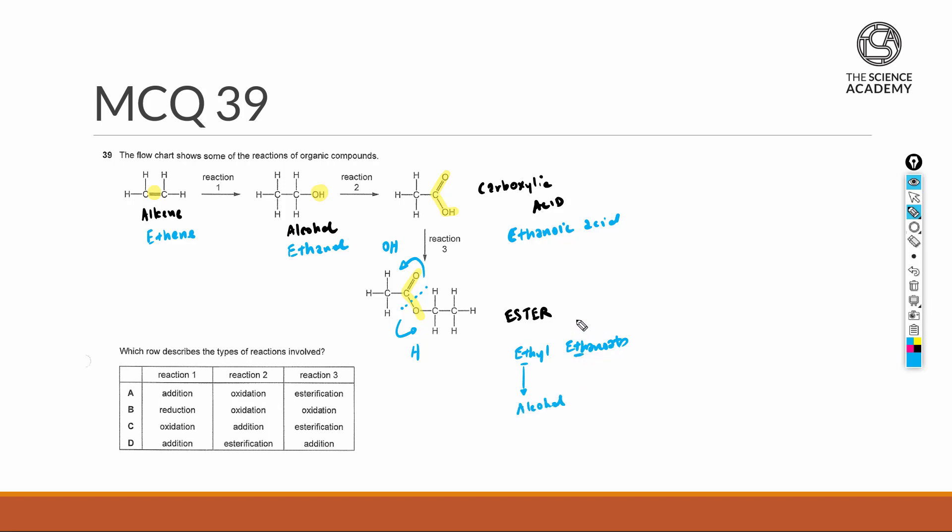From alkene to alcohol we'll be looking for a hydration event. Hydration is the same as an addition reaction. In MCQ38 the conditions have been given. Conditions here will be 300 degrees celsius, 65 atm, and phosphoric acid as a catalyst. Reagent will be steam. So addition reaction, this is for reaction one.